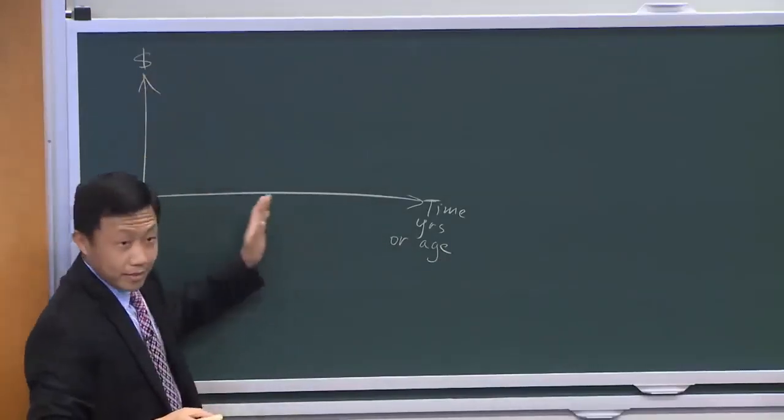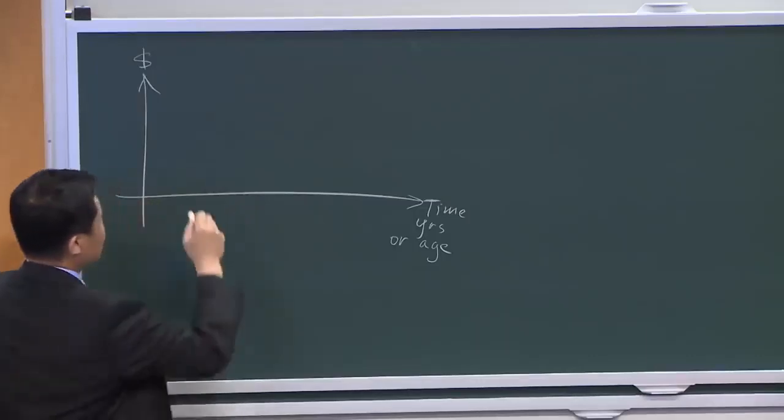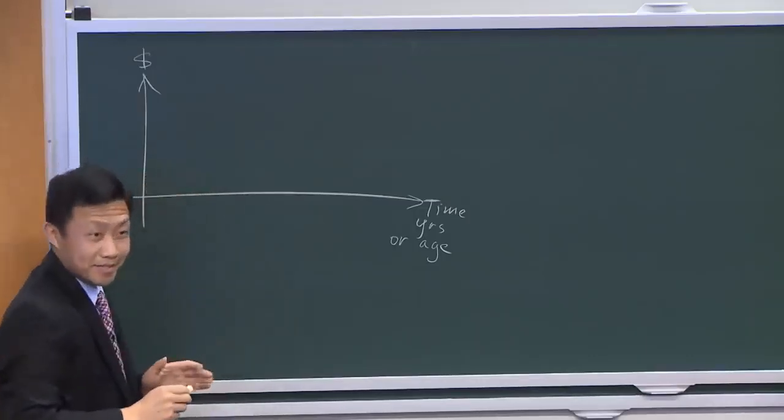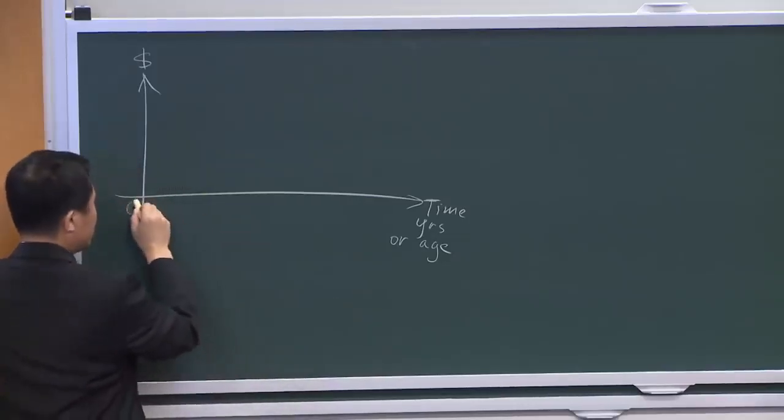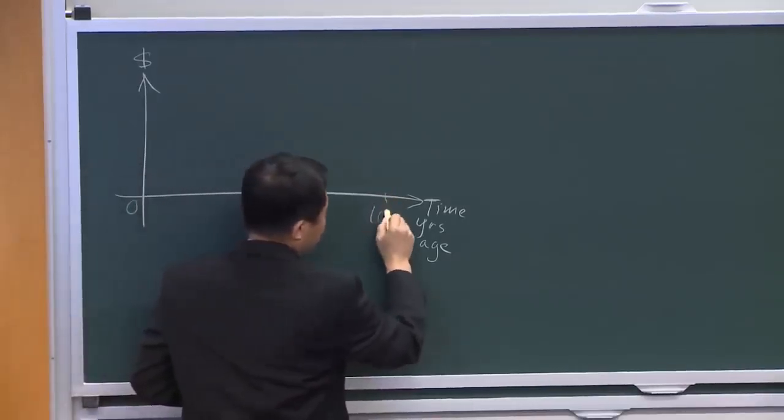Let's look at this chart. I'm going to plot your spending as a function of your age, from age 0 to age 100.